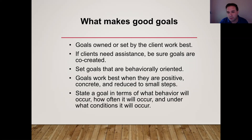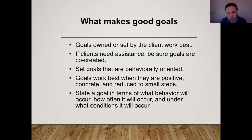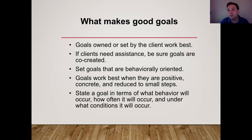State goals in terms of what behavior will occur, how often, and under what conditions. For example: 'On Friday at 11 o'clock, client will attend the Grow and Get Better AA meeting at 3642 Mockingbird Lane with their sponsor Joe S.' Specificity makes it easier to measure and easier to break down why it didn't work. If they didn't go, you can ask what happened at each step — maybe their sponsor didn't go, and they felt uncomfortable going alone. Now you have something to work on.